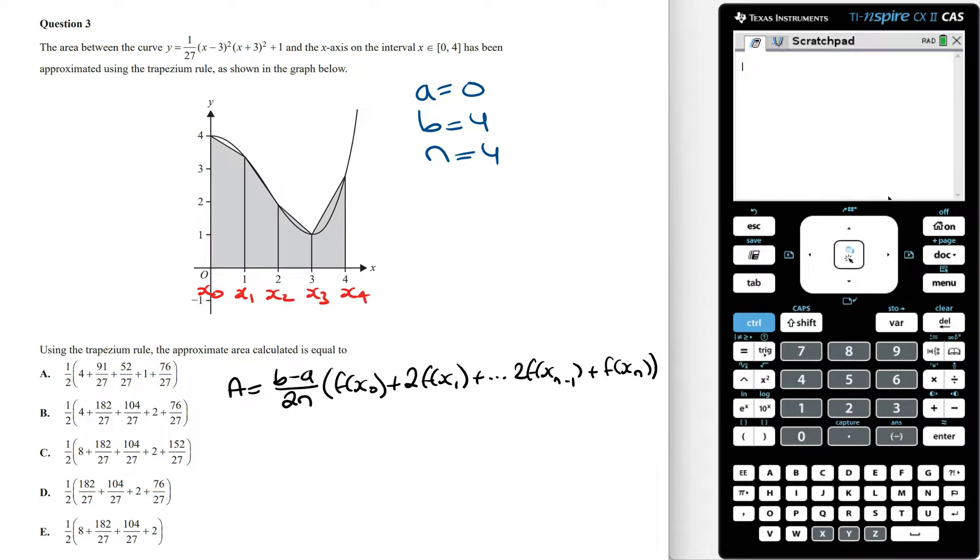From here, all we need to do is sub all these values into the formula to work out the area. And so the area is going to be 4 minus 0, which is 4, over 2 times 4, which is 8, and then multiplied by f of x0,